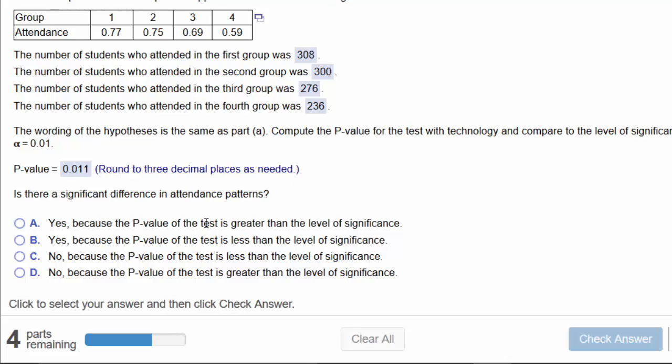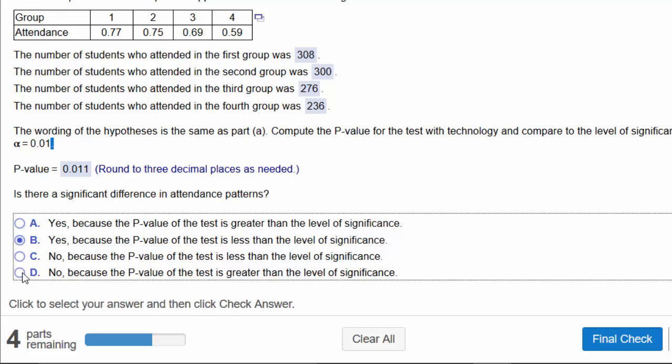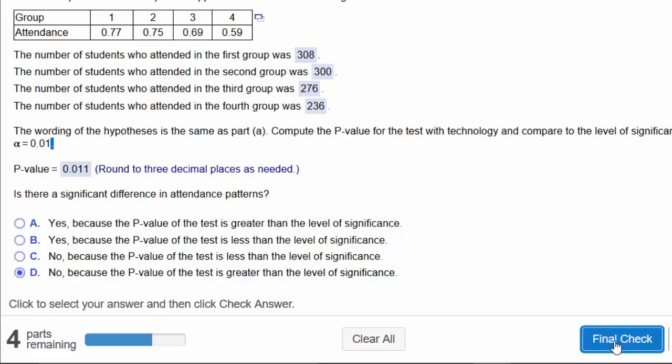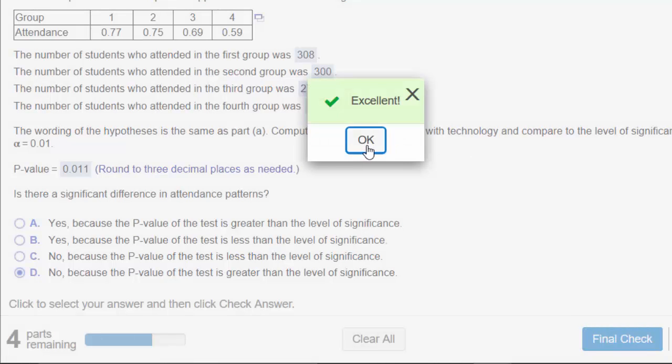Is there a significant difference in attendance pattern? So 0.011 is not below 0.01. Therefore, the answer is no, because the p-value of the test is greater than the level of significance. Excellent. Eventually.